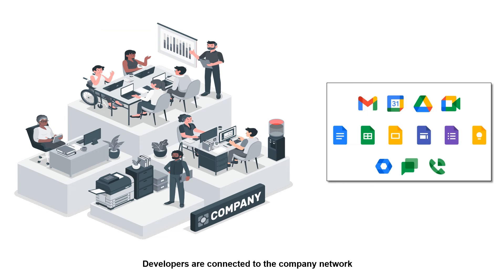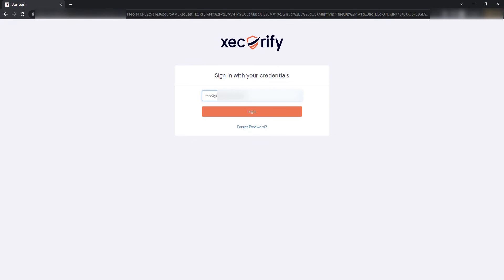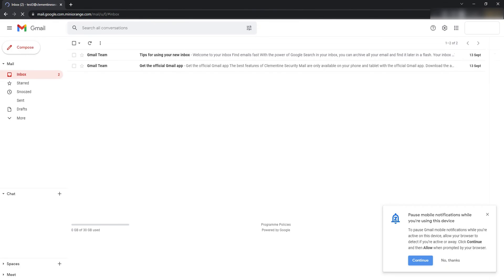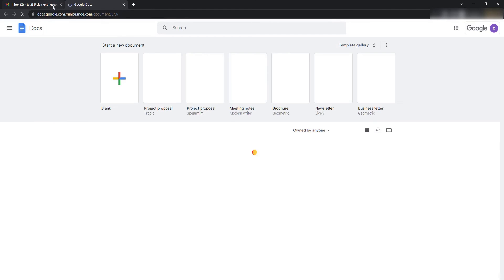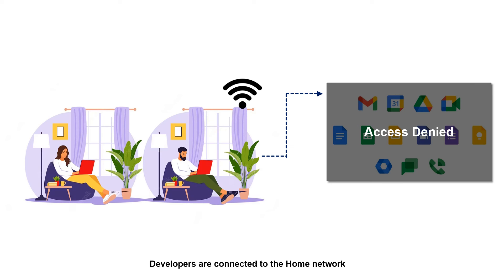For developers, Kevin wants them to access all Google products — Gmail, Docs, Drive, Calendar, etc. — but only within the company's network. Let's check the solution. Go to Gmail and enter your credentials. As you can see, developers are able to access all Google products because they are on the company network. Now, when the developer tries to access the application at home, they will not be able to access the application.